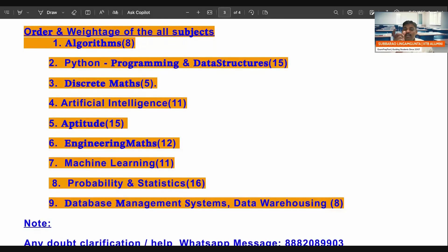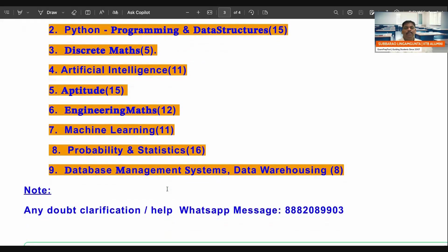Some students are saying, sir, what is the order of the subjects we have to follow? What are the weightages of all these subjects? By seeing all the years, we said like this. See, algorithm most probably we are going to expect 8 to 10 marks. Python programming and data structure combinedly, 15 marks, maybe 8 to 8. Discrete mathematics, you may get 5 marks. Artificial intelligence, 11 marks on an average. Aptitude, 15 you know. Engineering mathematics, approximately 12 marks you will get. Machine learning, 11 marks. Probability statistics, 16 marks. Database management, 8 marks. This is the most probable marks distribution. If you see the order, first you can study algorithm followed by Python, followed by data structure. Afterward, discrete mathematics, artificial intelligence, aptitude, engineering mathematics, machine learning, probability statistics, and database management. You can follow this order.